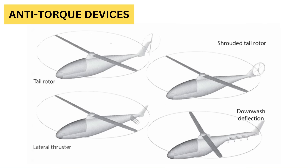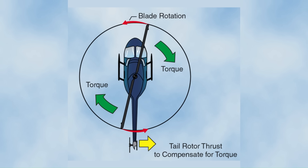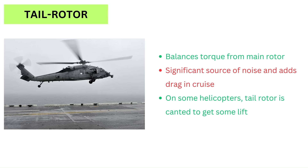Now let's look at the different anti-torque devices. As discussed, for a single main rotor, some kind of anti-torque device is required to balance the torque from the main rotor. For most helicopters this is provided by a tail rotor, which is driven by a shaft linked to the main rotor. The pilot's rudder pedals control the tail rotor's blade pitch, causing the yaw to change.